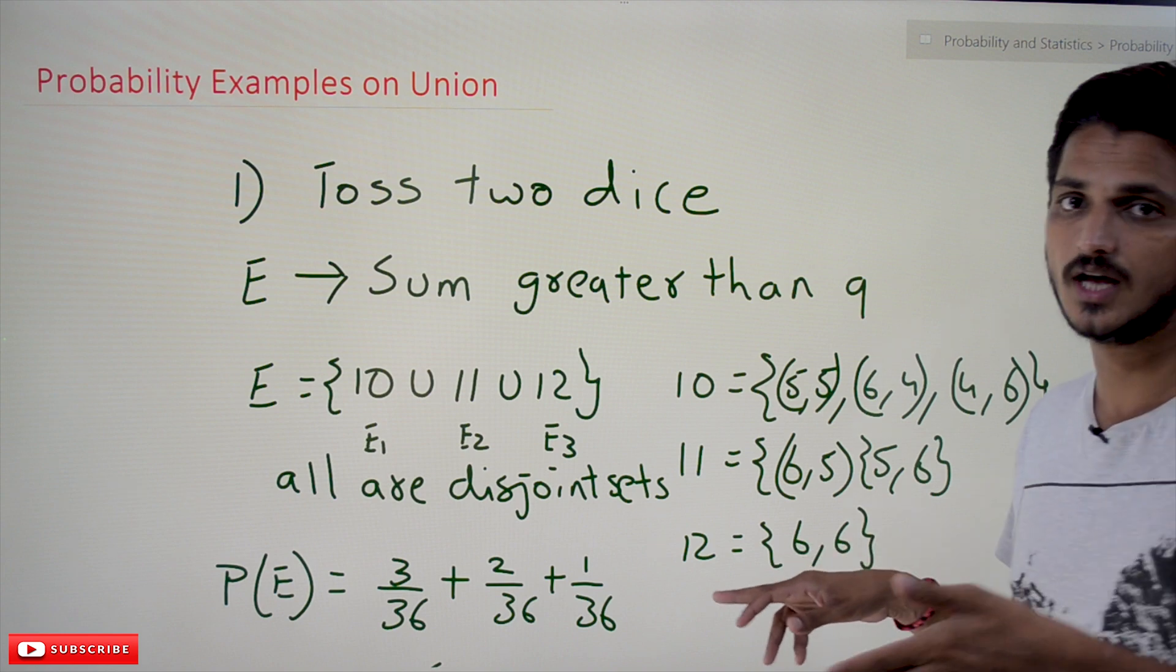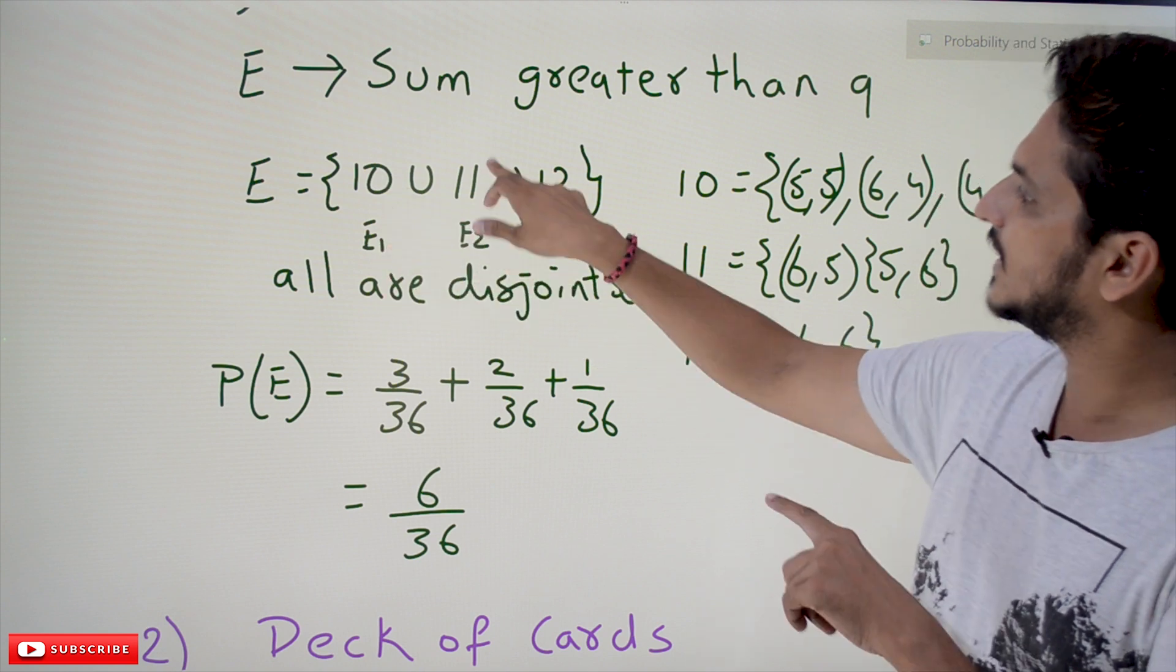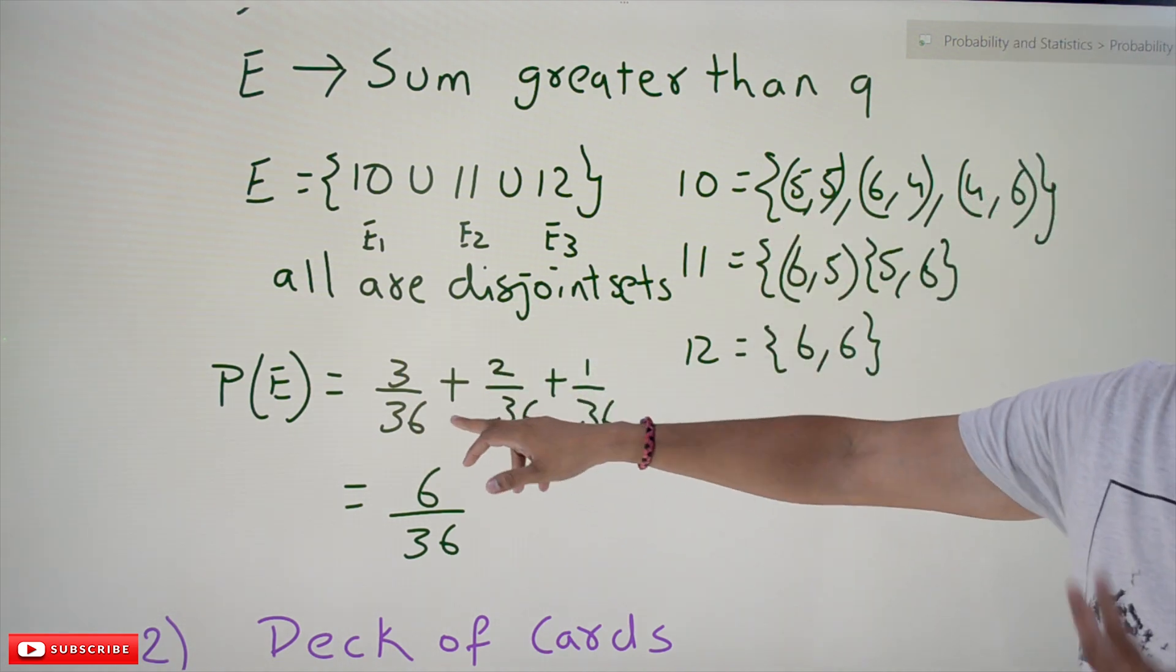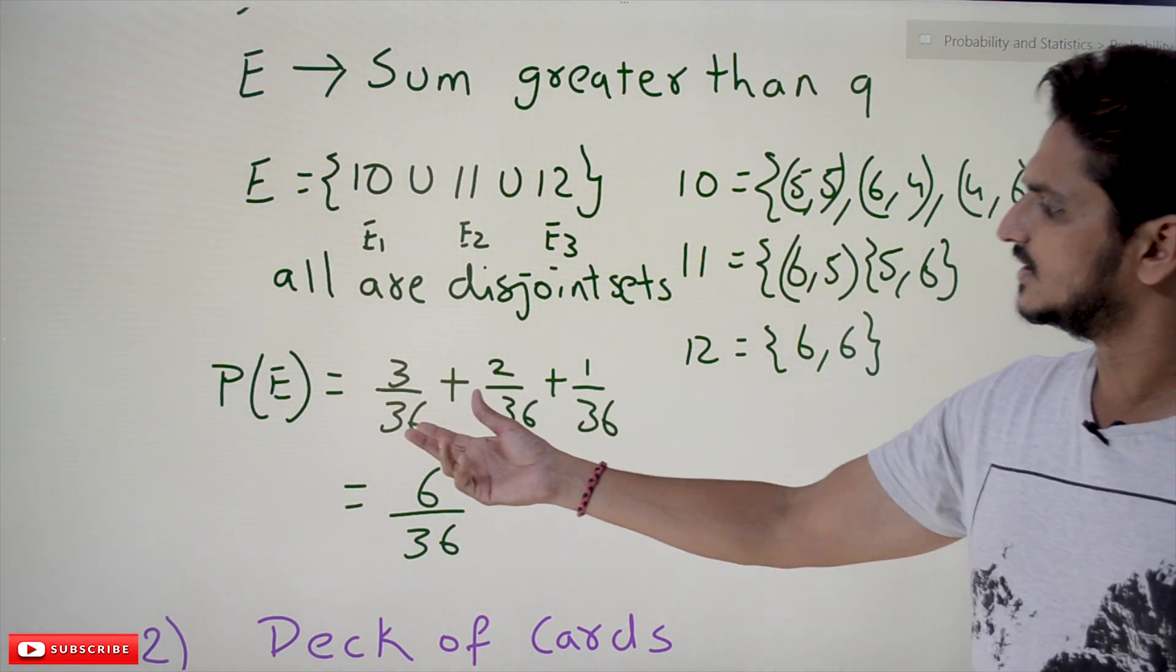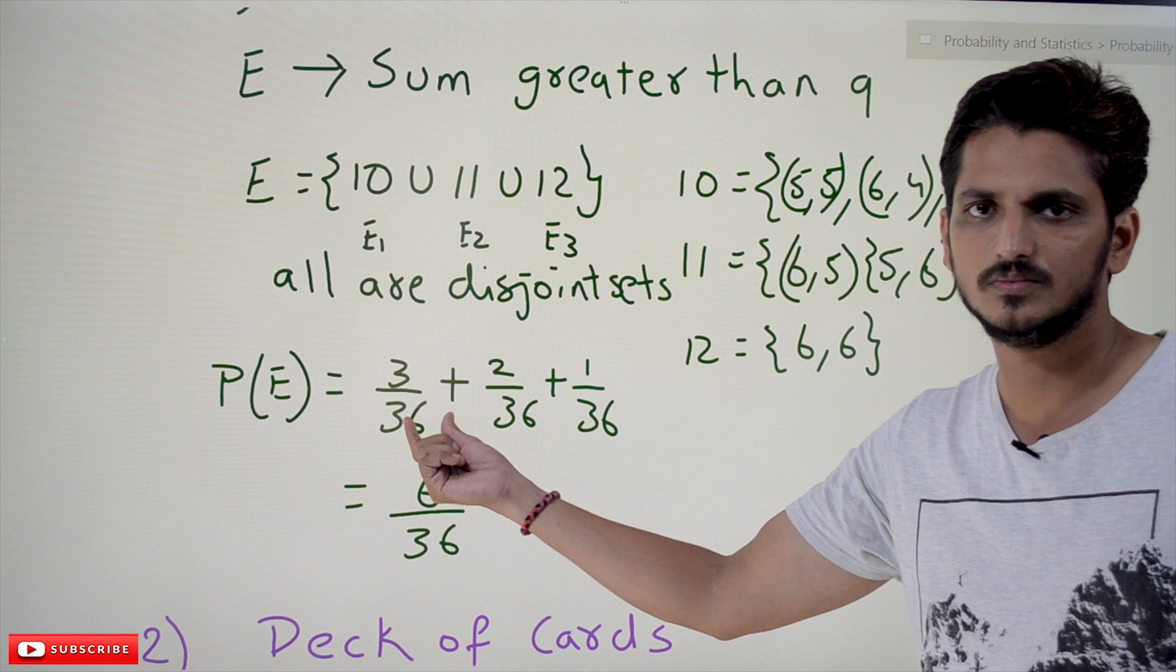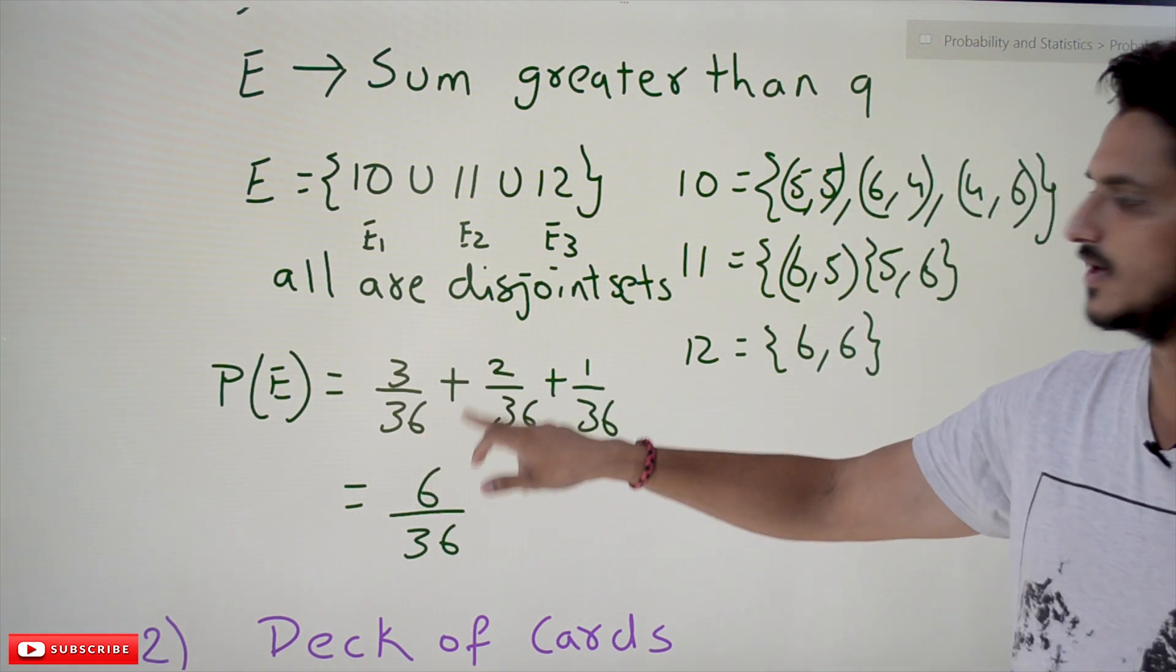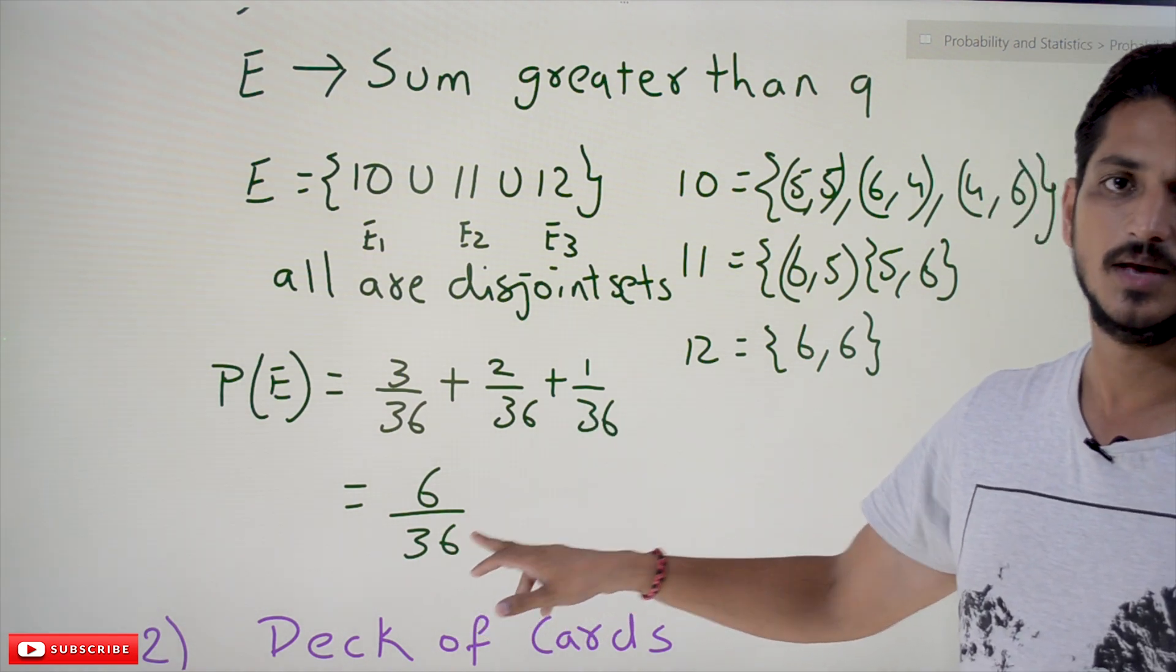We discussed the equation. What's the equation? The probability of E is given as probability of event E1 plus the probability of event E2 plus probability of event E3. That is 3 by 36 plus 2 by 36 plus 1 by 36. The total sample space is 36. Basic examples were already discussed, so we're not explaining clearly why we got this 36 value. The total probability is 6 by 36 because these are disjoint events.